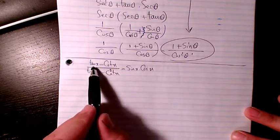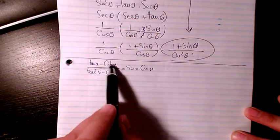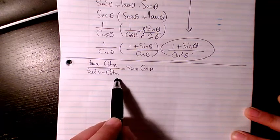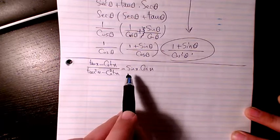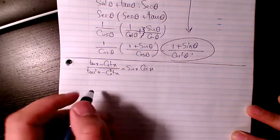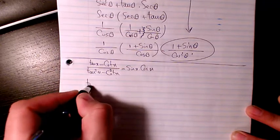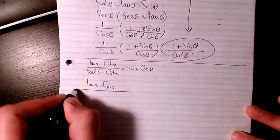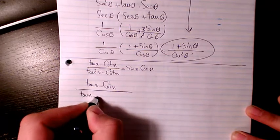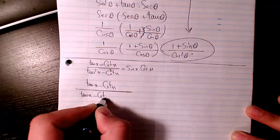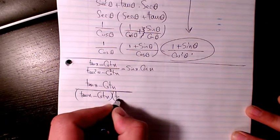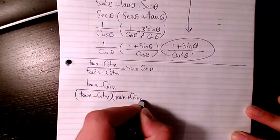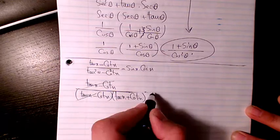In this example, we have (tan x − cot x) divided by (tan² x − cot² x), which equals sine x times cosine x. The denominator can be factored as (tan x − cot x) times (tan x + cot x), so (tan x − cot x) cancels out, leaving one over (tan x + cot x).